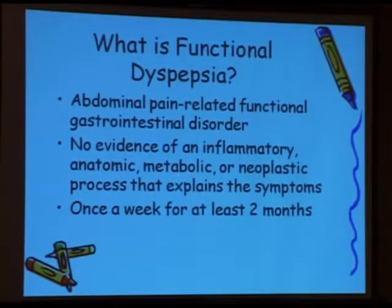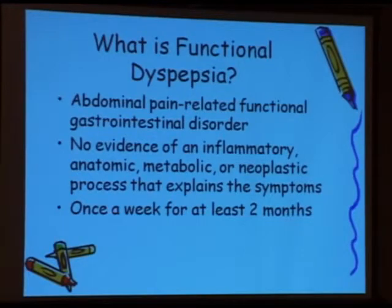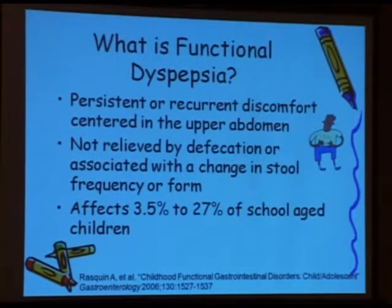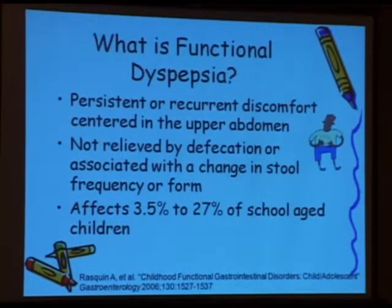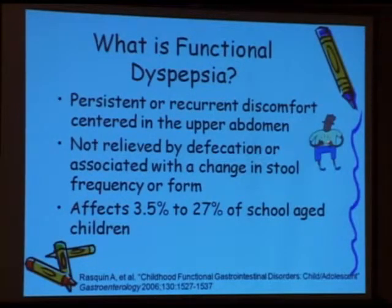For example, if a child had a mitochondrial disorder, they would not fit within this diagnosis. The frequency, recently defined by a group of experts, should occur once a week for at least two months. The discomfort for functional dyspepsia is persistent, recurrent discomfort centered in the upper abdomen — above the belly button area, as you can see right here.